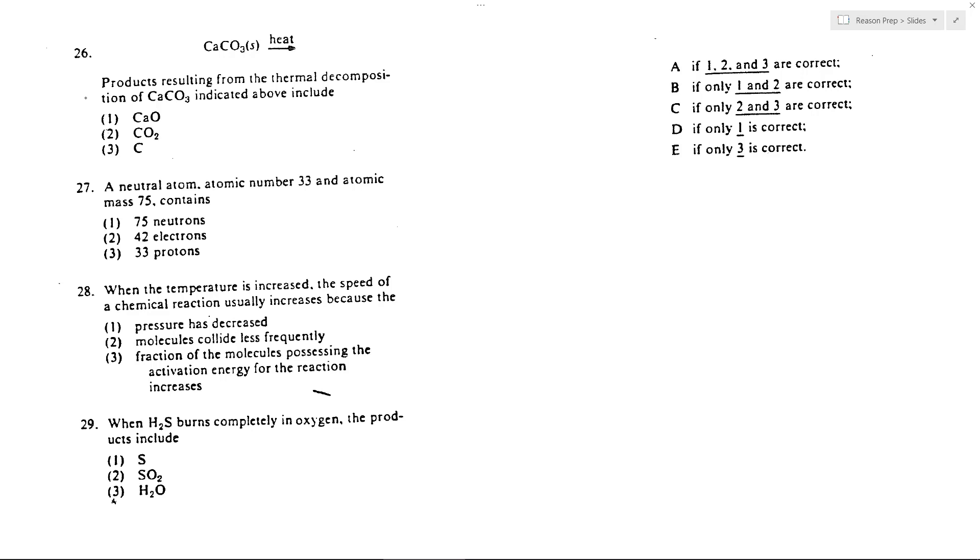So question 26, what are the products resulting from the thermal decomposition of CaCO3? This is one where you need to know what the products are going to be when you decompose it. Typically when you decompose a carbonate, one of the products is going to be carbon dioxide. So we can write plus CO2, and that means two is going to be one of the potential products. And then the other product, if you subtract a CO2 out of the calcium carbonate, will be calcium oxide. So those will be your two answers.